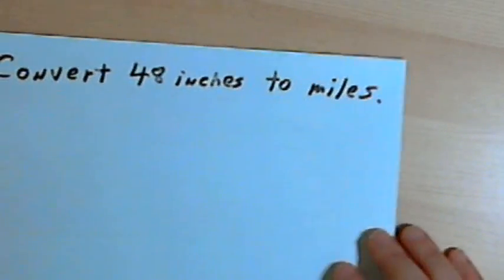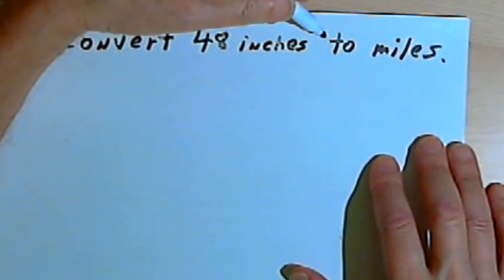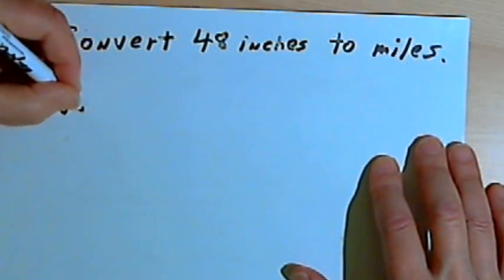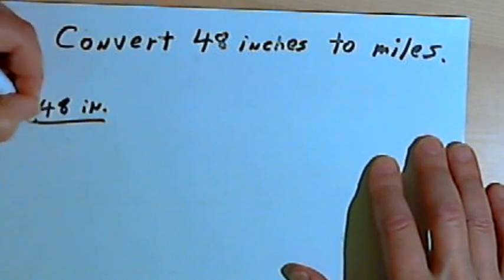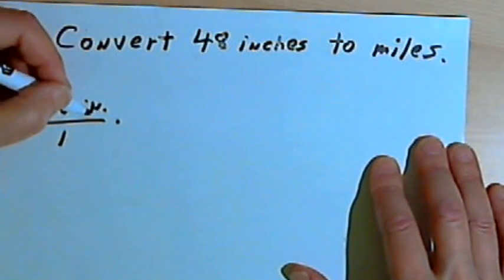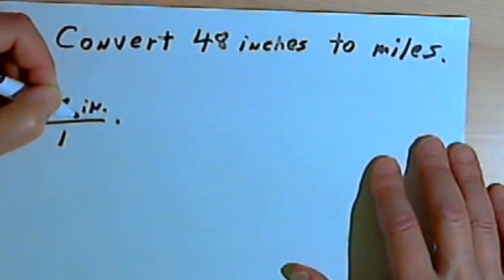Let's do one more. Let's convert 48 inches into miles. Okay, so I'll start out with 48 inches. I'm going to make that into a fraction. And I don't know how many inches there are in a mile, so I'll have to convert 48 inches first into feet.